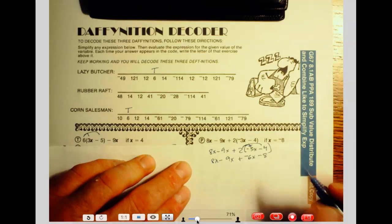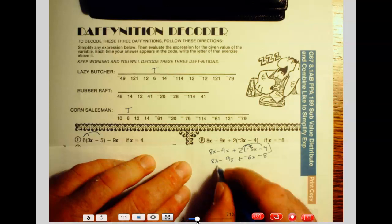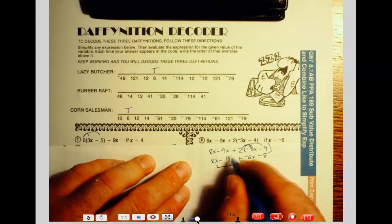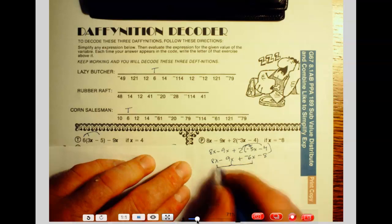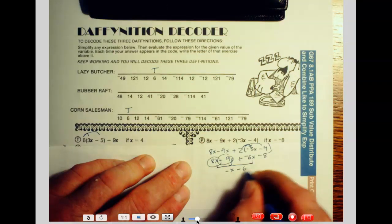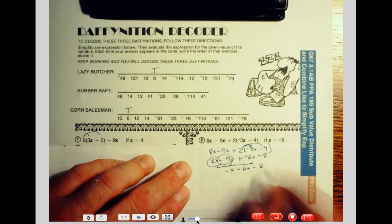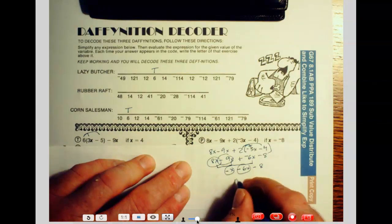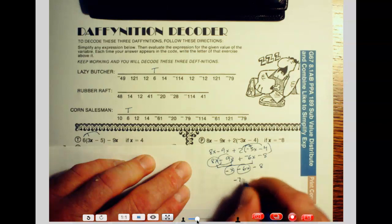So let's combine our x's here. We've got 3 of them. You think about it, these 2 guys together here, these are different signs. So the difference here is going to be negative x minus 6x minus 8. Now we've got 2 more negatives here, so we really have negative 7x minus 8.